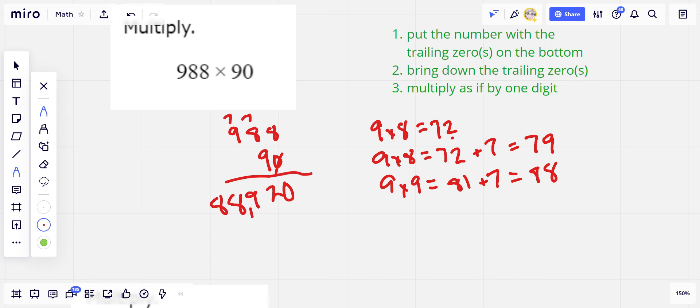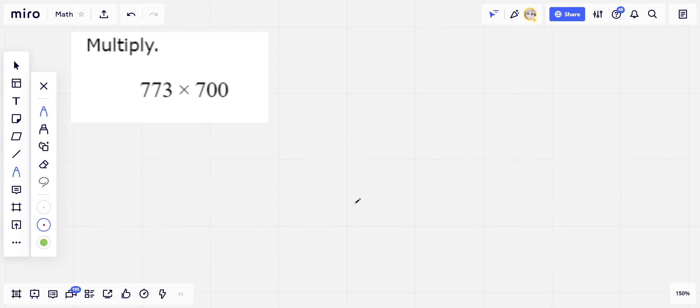And really that wasn't too much work for multiplying a big three digit number by a two digit number. Love those zeros. Let's try one more. This one is even better.